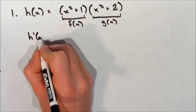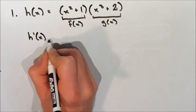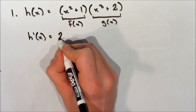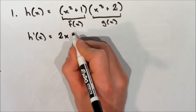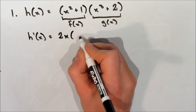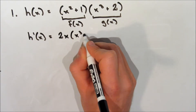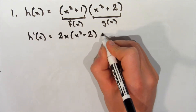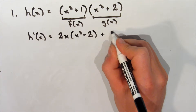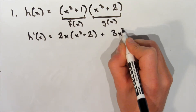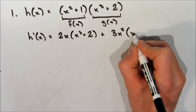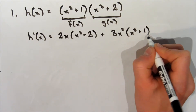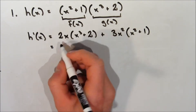All we have to do is apply that formula. So h prime of x is equal to the derivative of f of x, which is 2x, and we multiply it by g of x, which is x cubed plus 2. Then we add the derivative of g of x, which is 3x squared, and we multiply that by f of x, which is x squared plus 1.